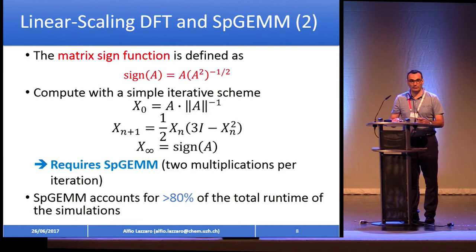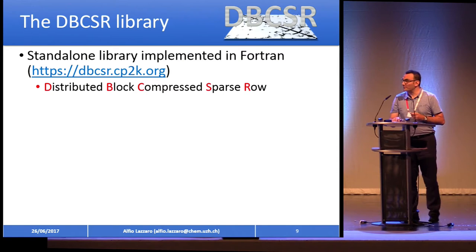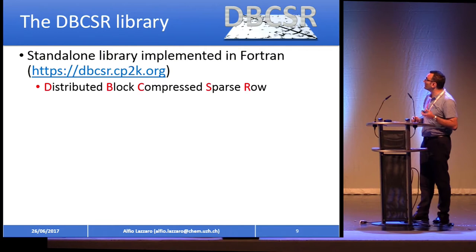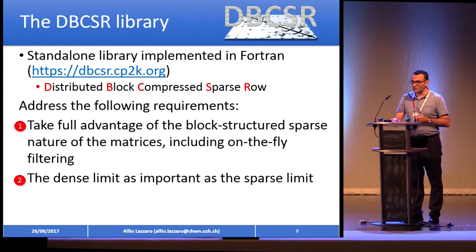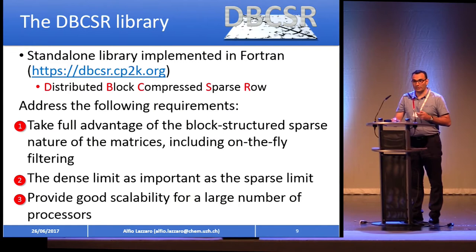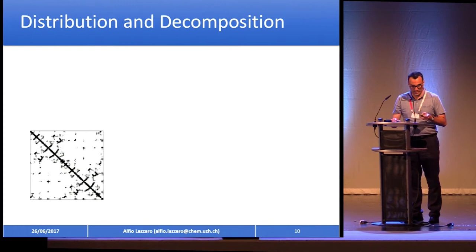Here it is — it's called DBCSR, as I mentioned before. It is able to address all the following points: it's written in Fortran, it's a standalone library, it can take full advantage of the block structure of the matrix to speed up execution. The density limit is important, it also has the sparse limit, and it provides good scalability for a large number of processors.